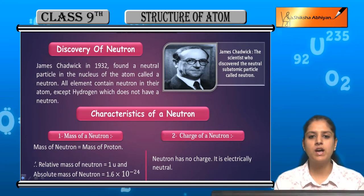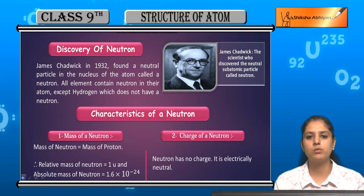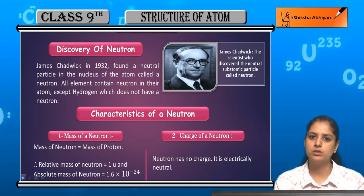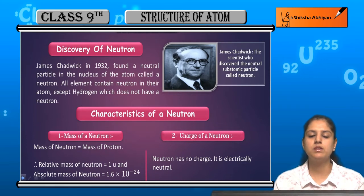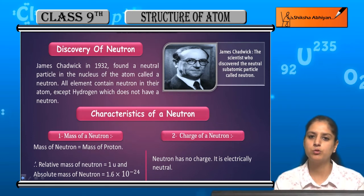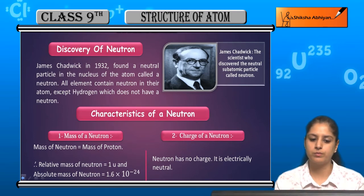He named that neutral particle. He said that in all elements, neutrons — that are neutral particles — are present, except hydrogen. In hydrogen, neutrons are not present; only protons and electrons are present. So James Chadwick in 1932 discovered neutrons.